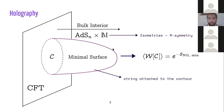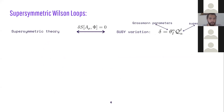As the string propagates in AdS, it can also propagate inside the compact manifold. By exploring R-symmetry constraints on the Wilson loop, we can also explore isometries of these solutions. For instance, the CFT could be N=4 super Yang-Mills, in which case the bulk interior is AdS5 × S5. Of particular interest to us is when the CFT is the ABJM theory, a three-dimensional theory, where the bulk interior is AdS4 × CP3.